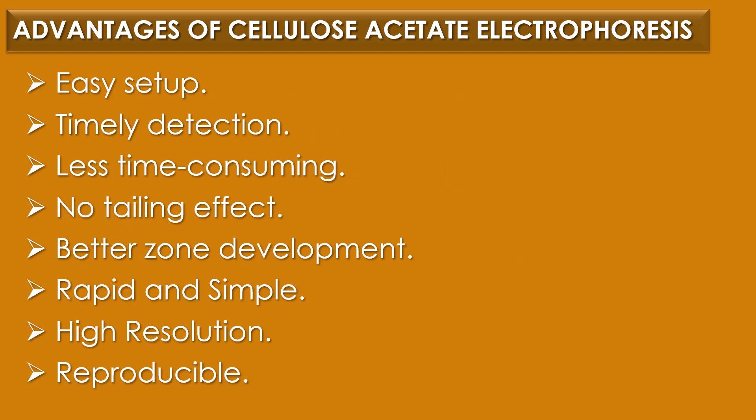The advantages of cellulose acetate electrophoresis include easy setup, timely detection, less time consuming, no tailing effect, better zone development, rapid and simple method, high resolution, and reproducible results.